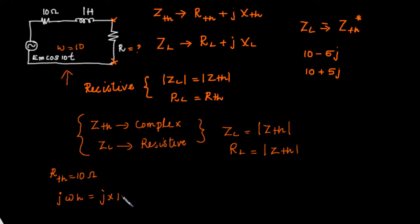Omega is 10 times 1 Henry, which is 10j. This means we have the Thevenin impedance of the network as ZTH equal to 10 (the resistive part) plus 10j (the reactive part).